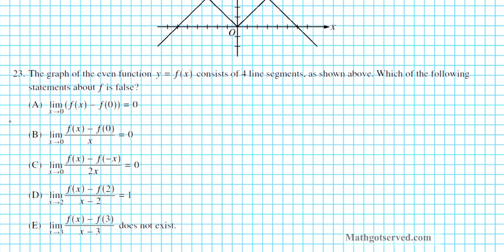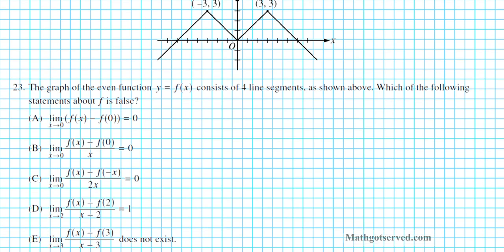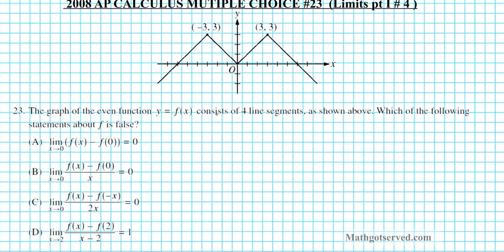It says the graph of the even function y equals f of x consists of four line segments as shown above. So we have the graph right here. Which of the following statements about f is false?